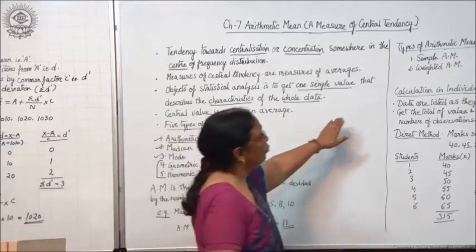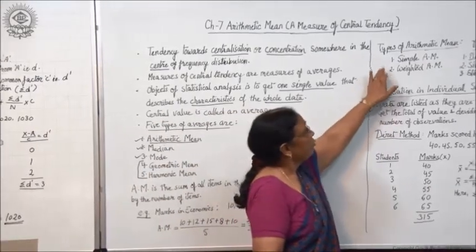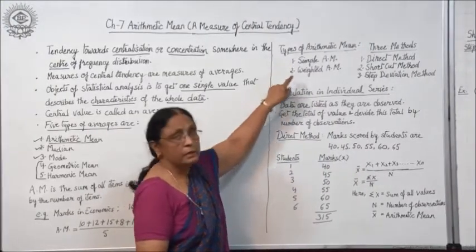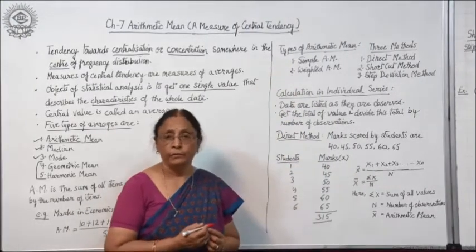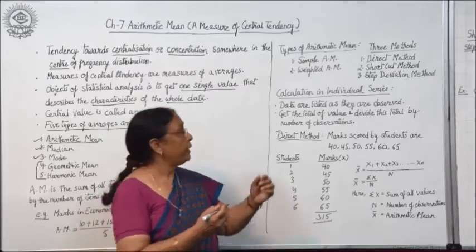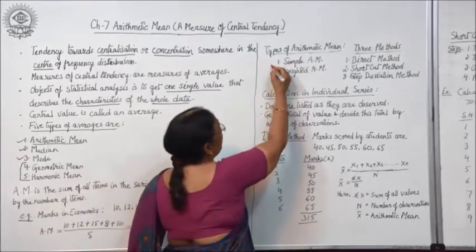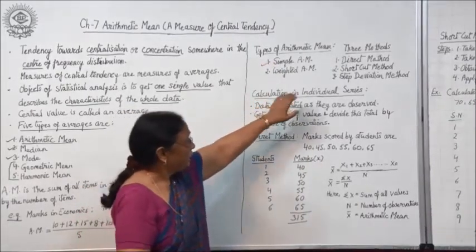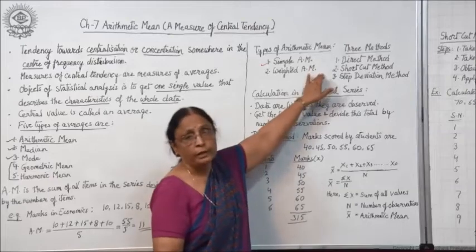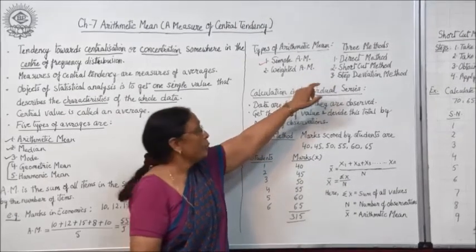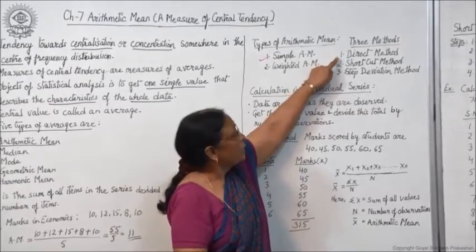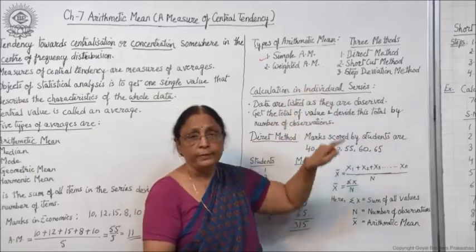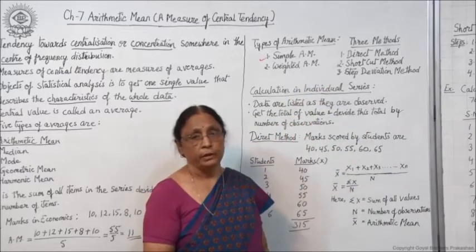There are two types of arithmetic mean: simple arithmetic mean and weighted arithmetic mean. We will first be taking only simple arithmetic mean. There are three methods of calculating simple arithmetic mean: the direct method, the shortcut method, and the step deviation method.